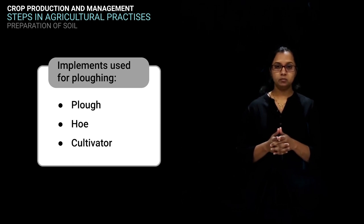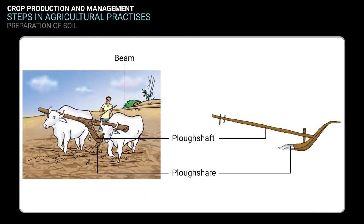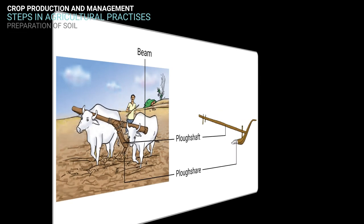Implements used for preparation of soil include the plow, hoe, and cultivator. The plow has been used since ancient times for tilling the soil, adding fertilizers to the crop, and removing weeds. It is made of wood and is drawn by a pair of bulls or other animals. It contains a strong triangular iron strip called a plowshare, and the main part is a long log of wood called the plow shaft with a handle at one end. One pair of bulls and a man can easily operate the plow. However, the indigenous wooden plow is increasingly being replaced by iron plows.